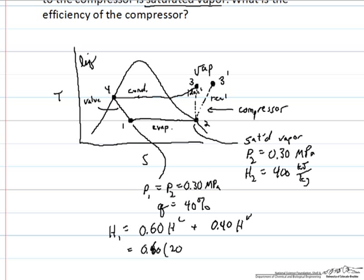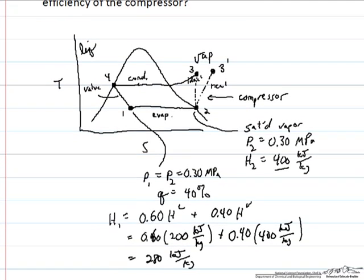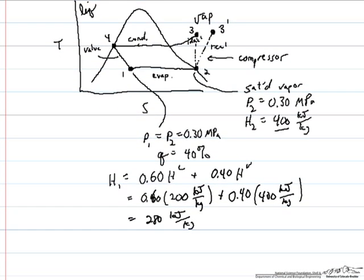I find the enthalpy of the liquid to be 200 kJ per kilogram, which we multiply by 0.6, and then add to that 0.4 times what we've already looked up for the enthalpy of the vapor, which is 400 kJ per kilogram as shown for H2. This works out to be 280 kJ per kilogram as the enthalpy of stream 1, and so we're taking heat out of whatever we're refrigerating and adding that to the enthalpy of the stream as we go from 1 to 2, we increase the enthalpy from 280 to 400.